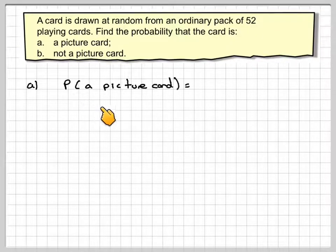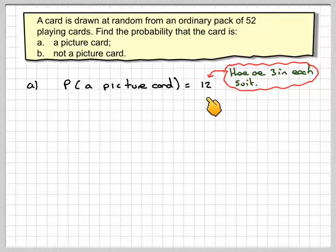Right, so the probability of a picture card is going to be 12, because there are 3 in each suit and there are 4 suits.